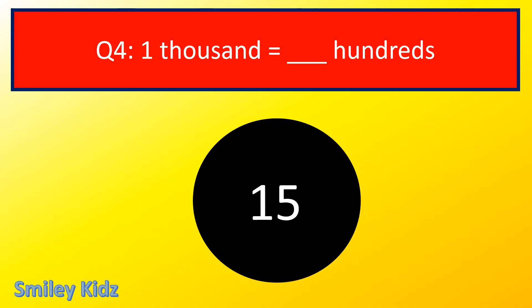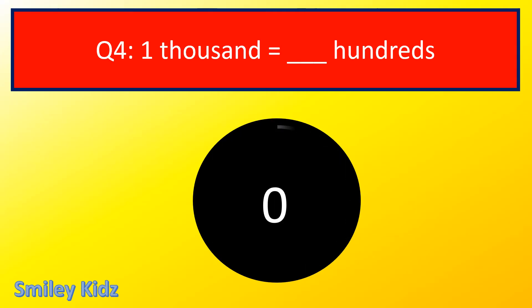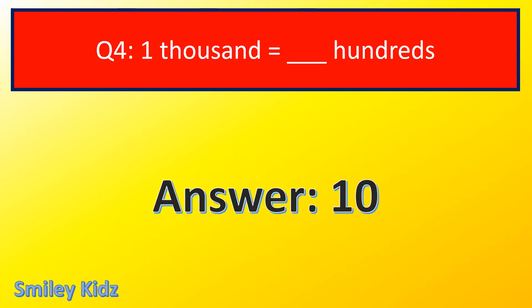Question number 4. 1,000 is equal to dash 100. The right answer is 10. 1,000 is equal to 10 hundreds.